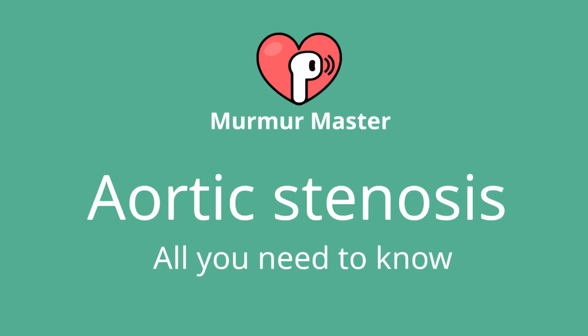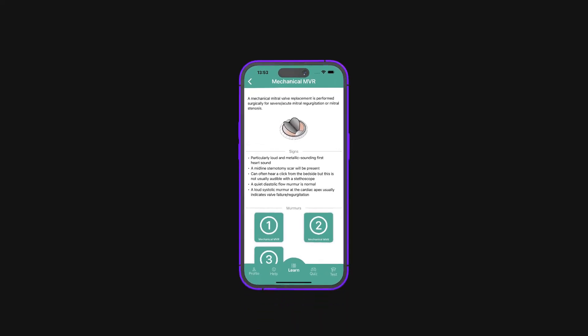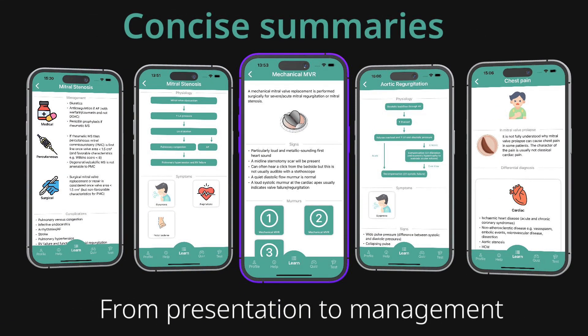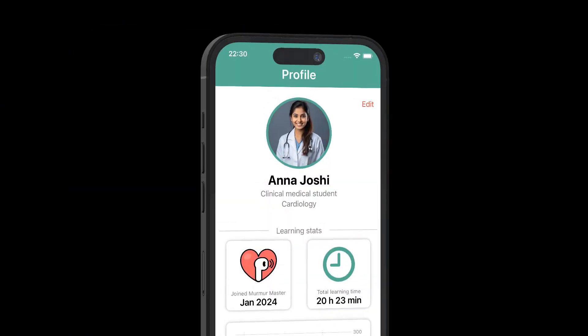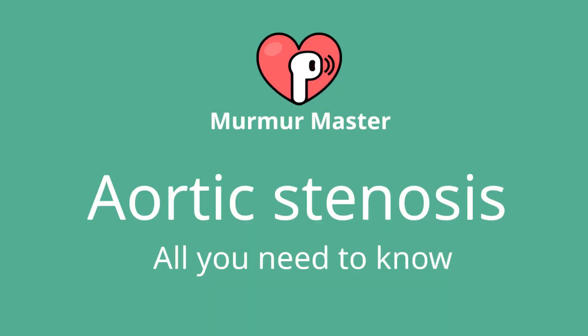That was the Murmur Master summary on aortic stenosis. If you found this video useful, be sure to check out the Murmur Master app, which contains hundreds of heart sounds recorded from real patients, summaries on a huge number of valve lesions, and hundreds of quiz and test questions. It's updated regularly as per international guidelines and is used by medical professionals all across the world. Remember to like and subscribe if you'd like to see more videos like this one.